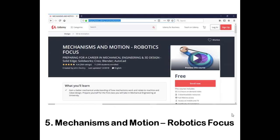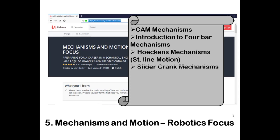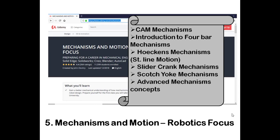The fifth course is a combination of robotics and CAD, called Mechanisms and Motions of Robotic Focus. It concentrates on development of cam mechanisms, introduction to four-bar mechanisms, Hoekens mechanisms for straight-line motion, slider-crank mechanisms, Scotch yoke mechanisms, advanced mechanism concepts, and a final case of robot design. This is quite useful for mechanical engineering students who study kinematics and dynamics of machinery, as it enhances their creativity and designing skills.